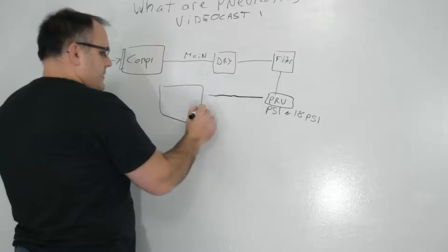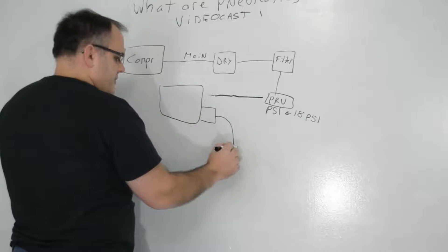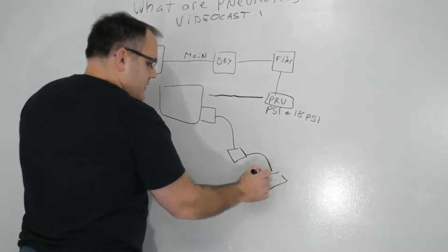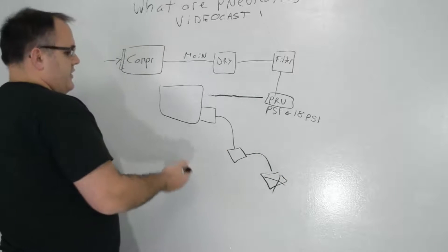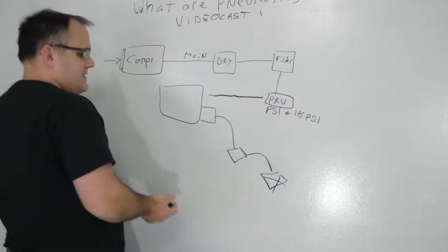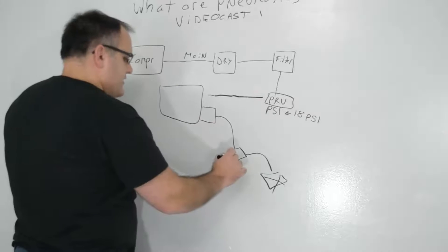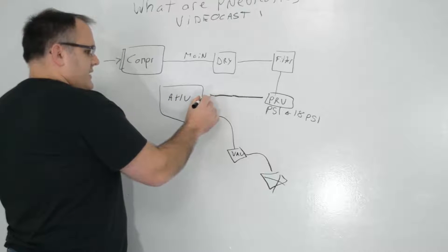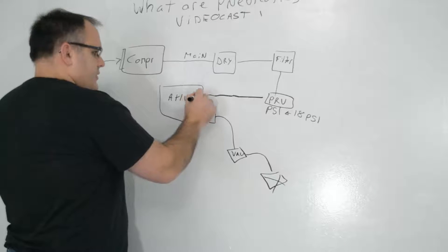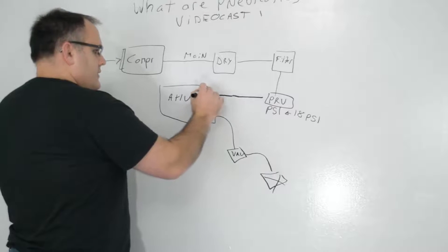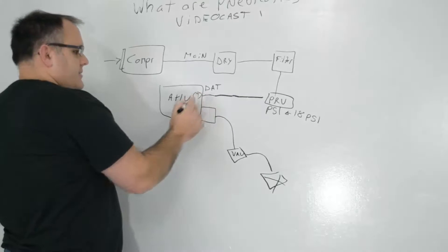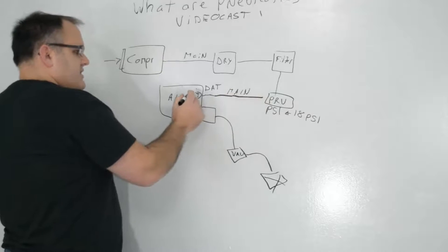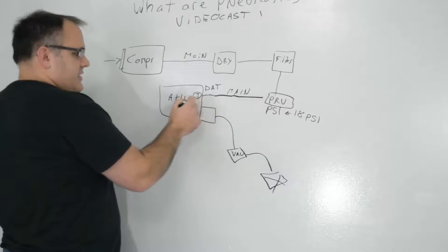you're going to go maybe to an air handling unit. And on this air handling unit, maybe it has a discharge that then supplies air to a VAV box, which supplies air to either a vent or to a space, it doesn't matter. So we're going to call this VAV and call this AHU. So right here, you've got this main line and it's coming into the AHU. And maybe you have a discharge air temperature sensor.